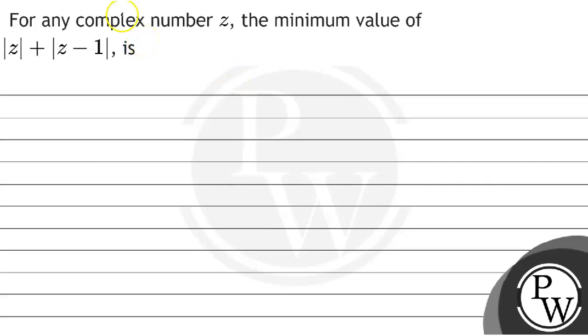Hello, let's see the question. The question says that for any complex number z, the minimum value of mod of z plus mod of z minus 1 is.